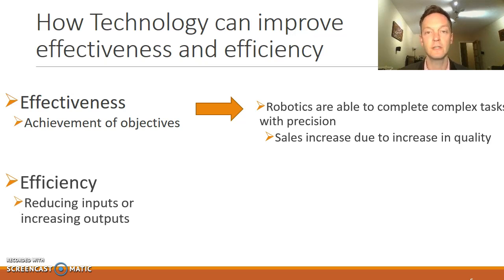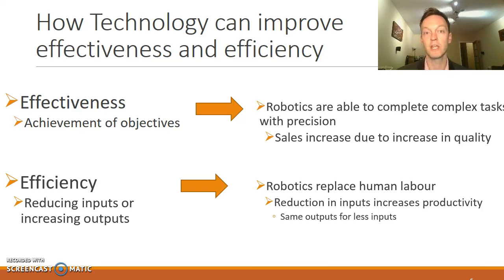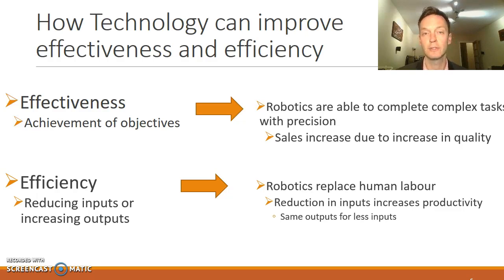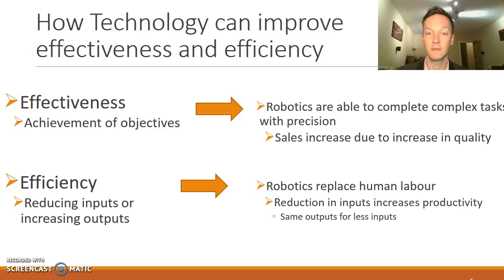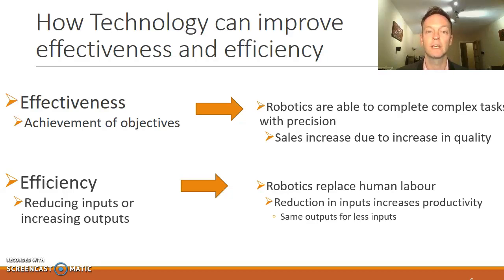The second one is efficiency — don't forget, this is about reducing inputs or increasing outputs, that's how you improve efficiency. One way you might do that is by bringing robotics in. You're using capital, which in the long term is cheaper than human beings. They don't need rest breaks, they don't need holidays, they don't complain about working overtime, they can work 24 hours a day. So in the long run, robotics are much cheaper than humans. You are seeing a reduction in inputs for the same amount of outputs, thus improving productivity. So there are just some examples of how technology can improve the effectiveness and efficiency of operations.